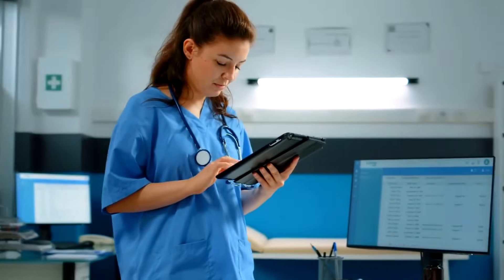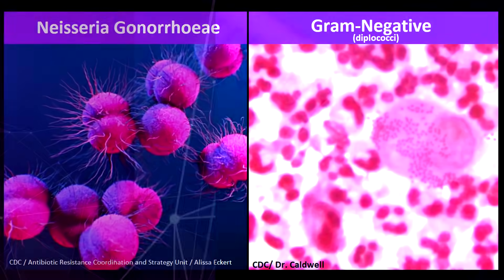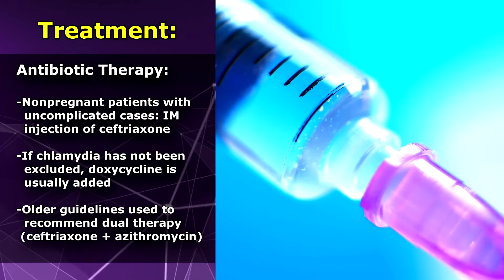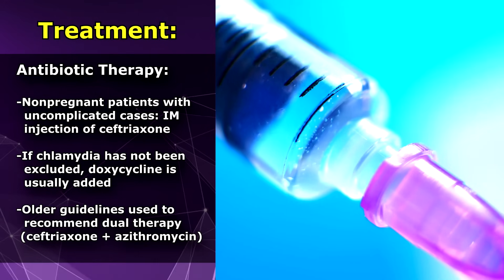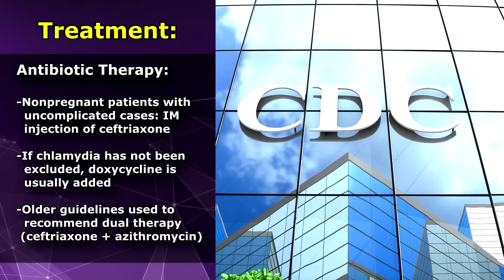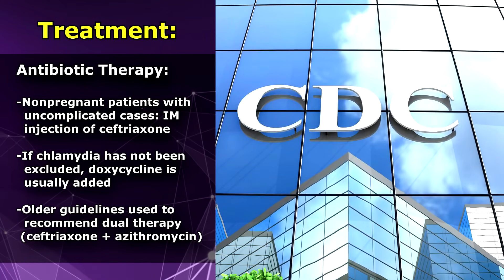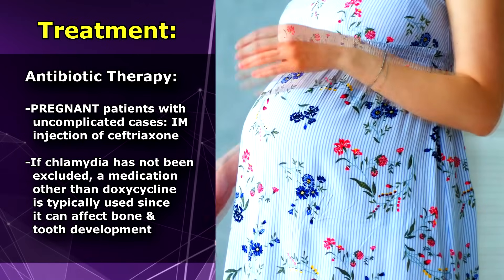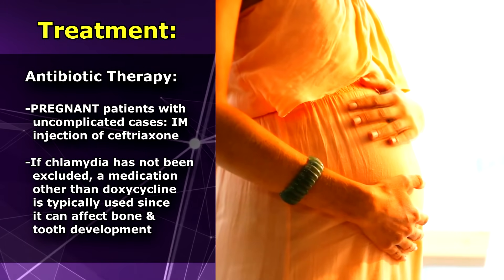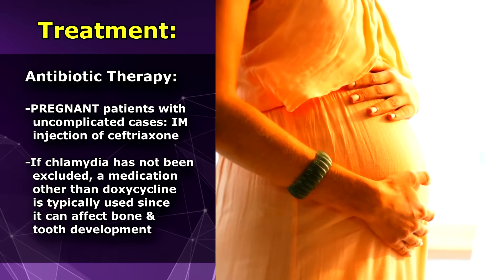For treatment, since we're dealing with a gram negative bacteria, treatment revolves around antibiotic therapy. Currently the CDC recommends that non-pregnant patients with uncomplicated gonorrhea be treated with a single dose of ceftriaxone IM. If chlamydia has not been excluded, doxycycline is added. Note that older CDC guidelines recommended dual therapy with ceftriaxone IM and azithromycin, but that is no longer the case. For pregnant patients the recommendation is the same, except if chlamydia has not been excluded, a medication other than doxycycline must be used, as doxycycline is contraindicated in pregnancy because it can affect bone and tooth development.